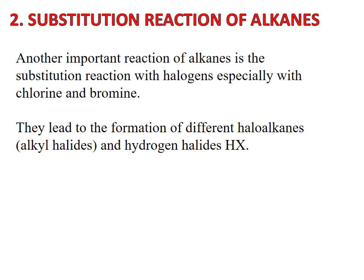The second reaction of alkanes is the substitution reaction. A substitution reaction is a reaction with halogens, especially chlorine and bromine. This substitution reaction produces two products. The first product is an organic compound called a haloalkane, since it is an alkane that contains a halogen. The second product is a hydrogen halide, HX, where X could be either Cl or Br.